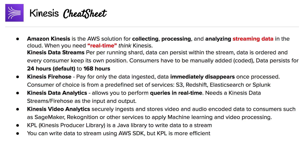To actually send data to the streams, you have to either use KPL — the Kinesis Producer Library, which is a Java library to write to a stream — or you can write data to a stream using the AWS SDK. KPL is more efficient, but you have to choose what you need to do in your situation.